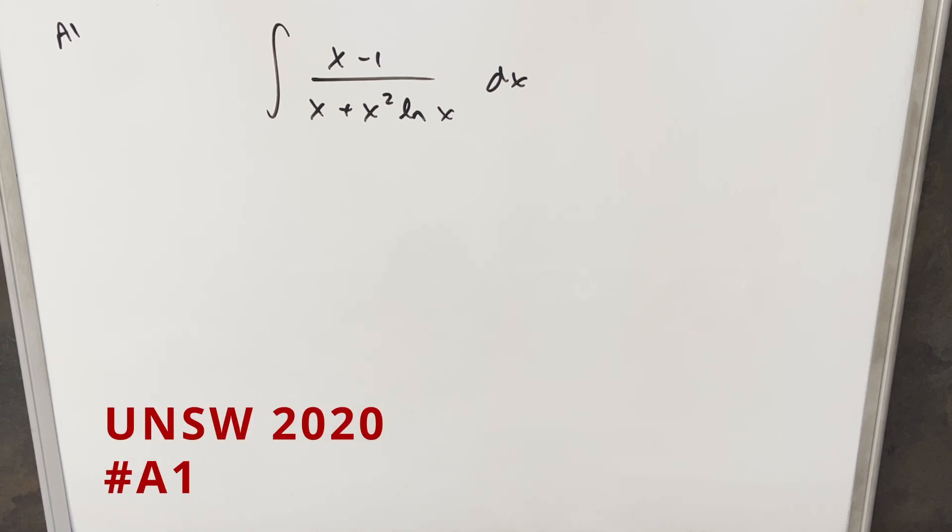We have here an interesting integral from the UNSW integration B 2020. This was problem A1. We have the integral of x minus 1 over x plus x squared ln x dx.